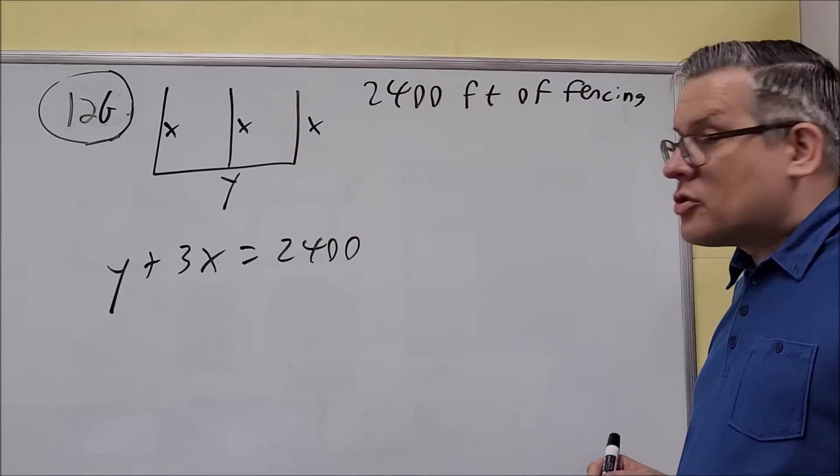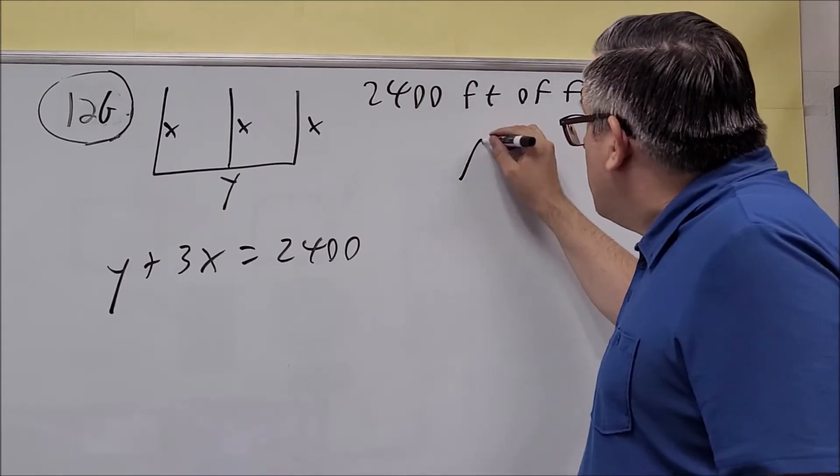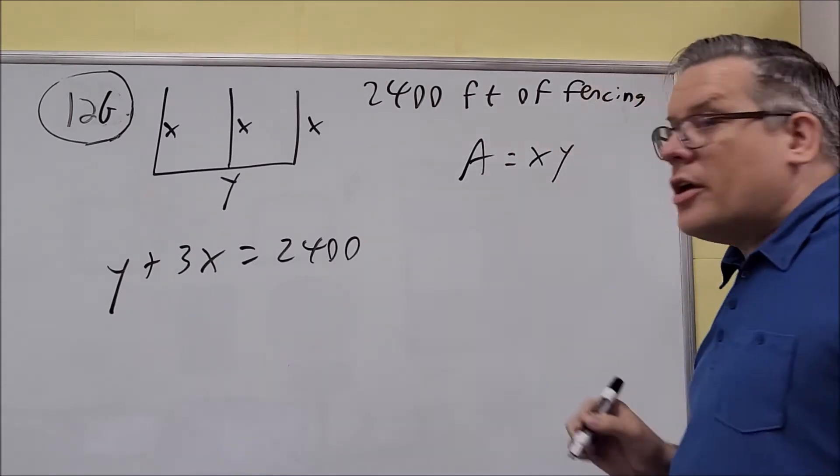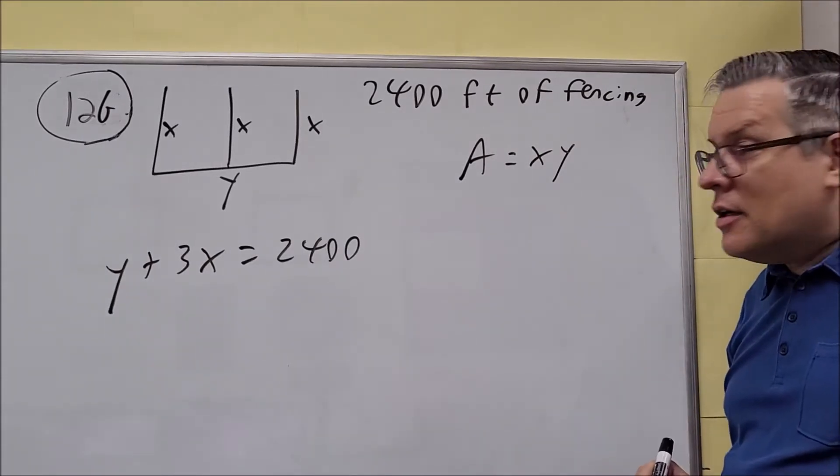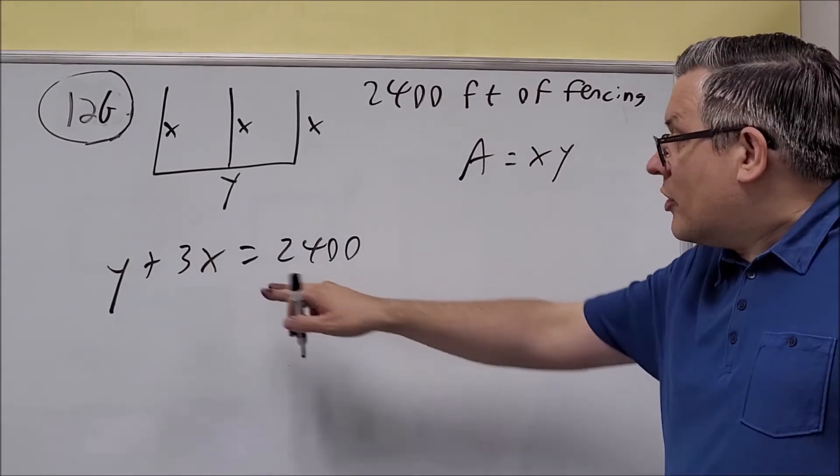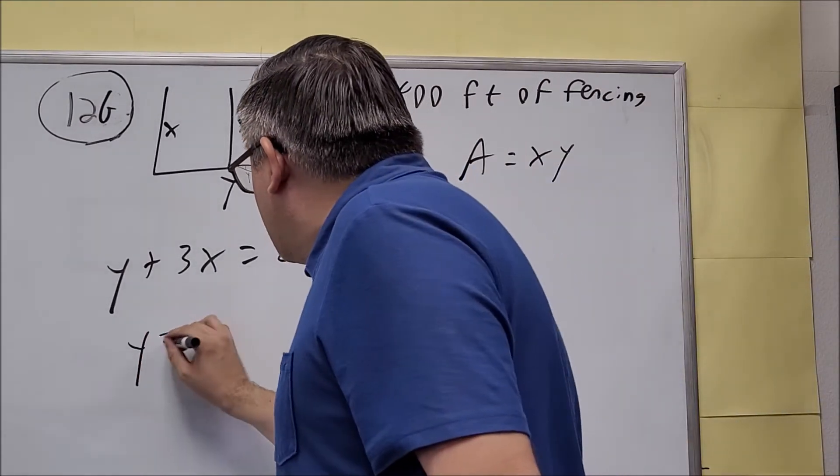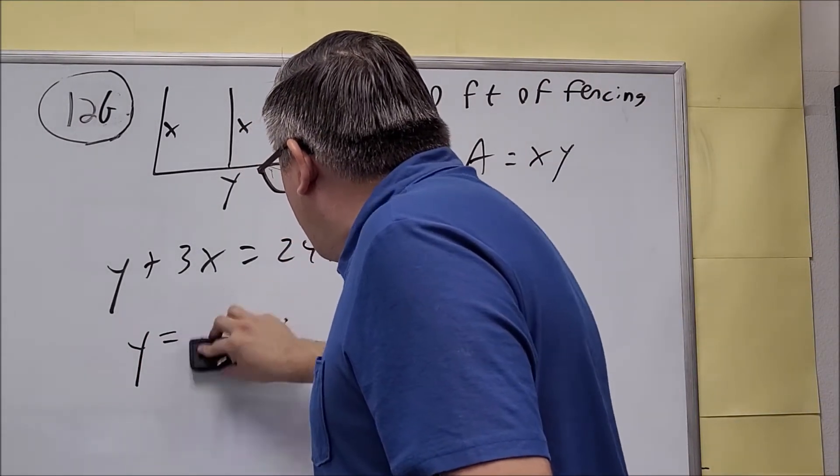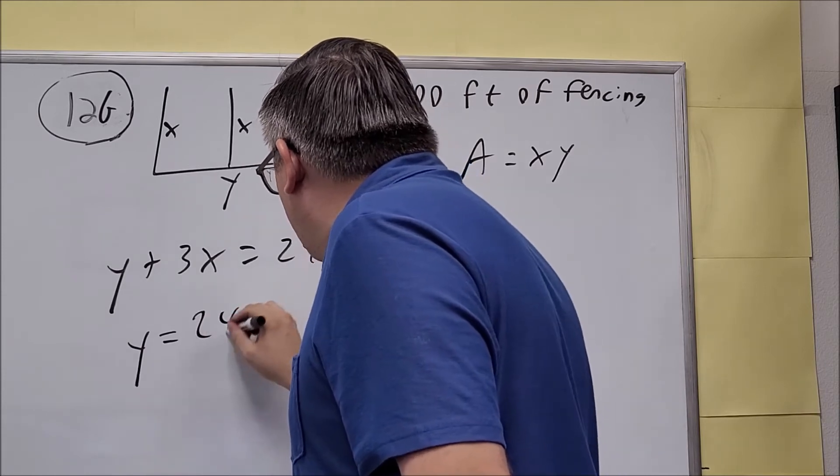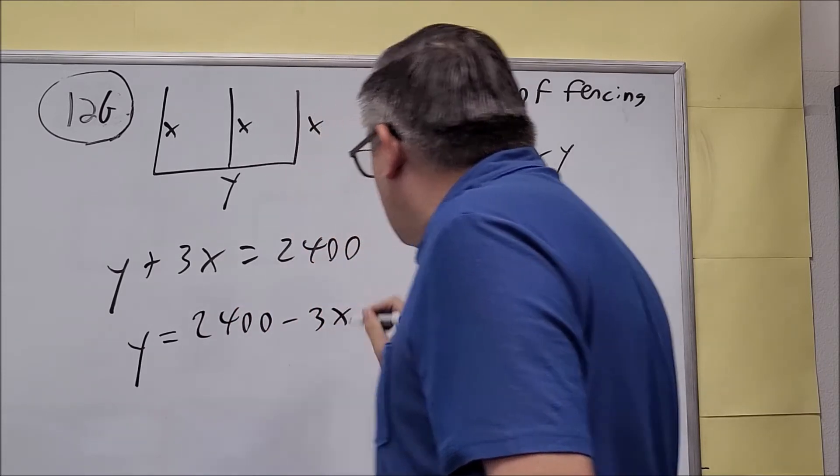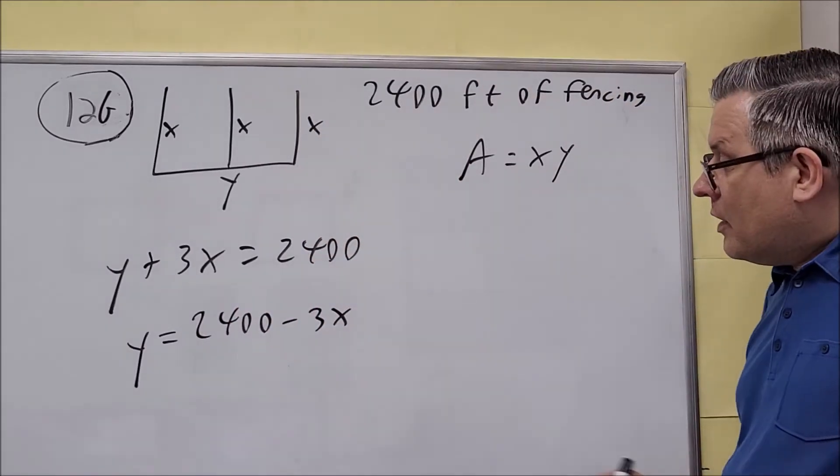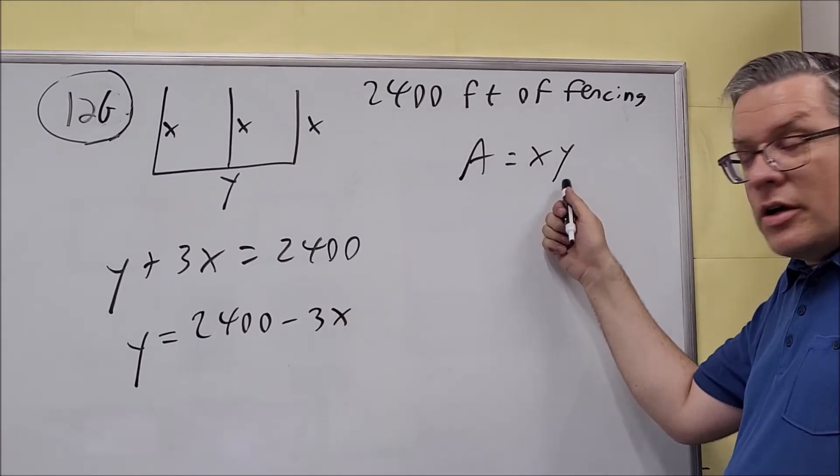We want to solve for y because eventually we need to put it into the area formula. We have area equals x times y. So solve this for y and put it into the area equation. Y equals 2,400 minus 3x. Now we're going to take this and put it into the area formula.